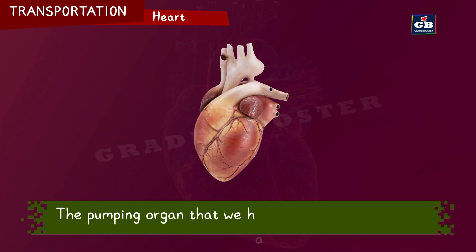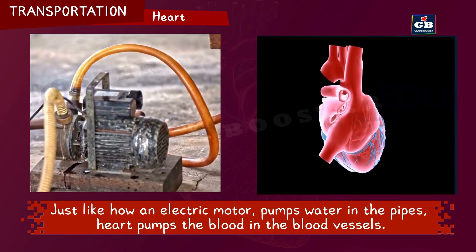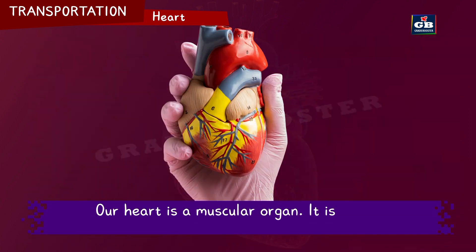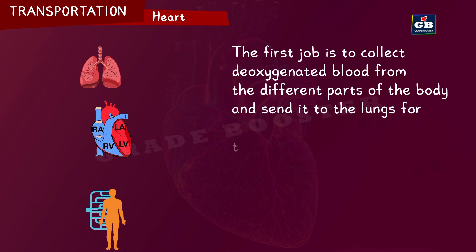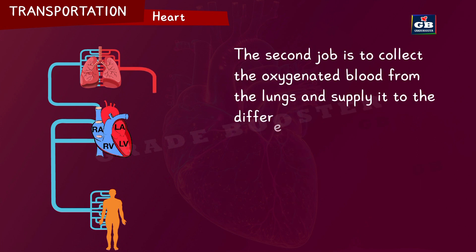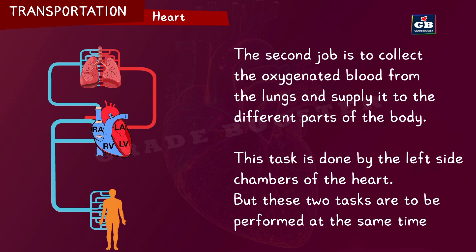The pumping organ in our body is the heart. Just like how an electric motor pumps water in the pipes, the heart pumps blood into the blood vessels. Our heart is a muscular organ the size of our fist. It does two important jobs: the first is to collect deoxygenated blood from different parts of the body and send it to the lungs for oxygenation — this is done by the right side chambers. The second is to collect oxygenated blood from the lungs and supply it to the different parts of the body — this is done by the left side chambers.